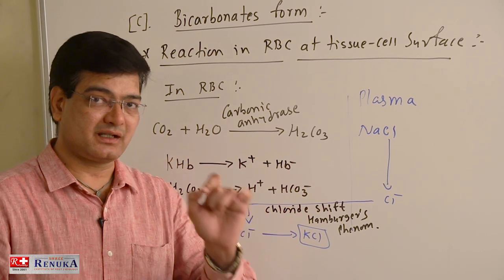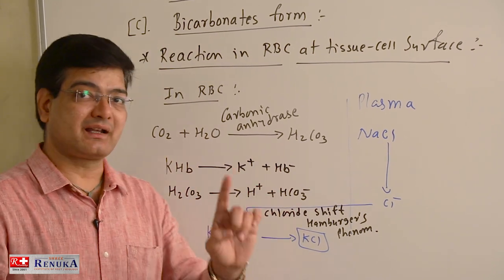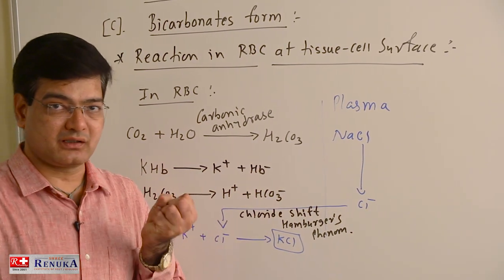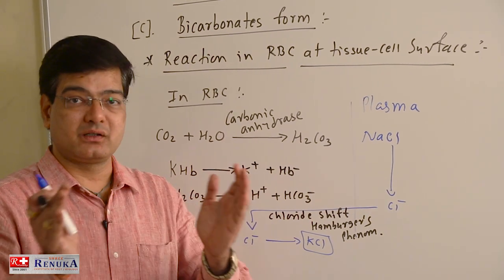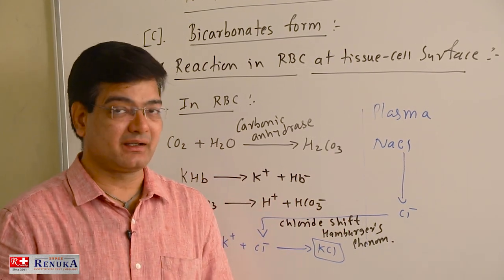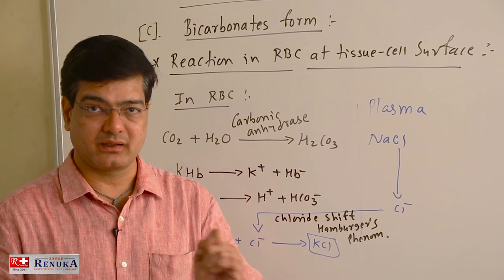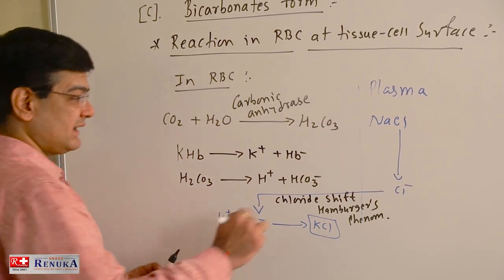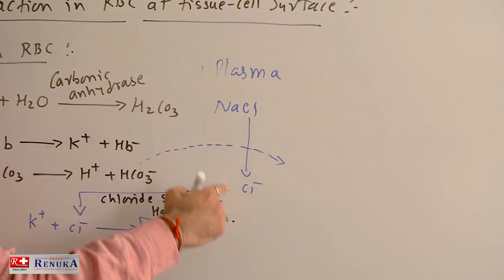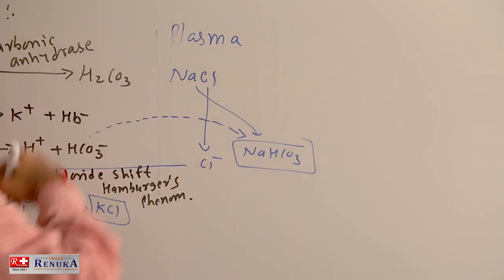In the form of KHCO3, carbon dioxide cannot be transported, because KHCO3 is highly alkaline — it is a strong base that increases the pH. In that case, the RBC would absorb water from the surrounding blood plasma, causing it to swell and possibly burst, which is called hemolysis. To prevent hemolysis and remove ionic imbalance in the RBC, the chloride shift (Hamburger's phenomenon) is required. HCO3- formed in the RBC then enters the blood plasma and reacts with Na+ to form NaHCO3 in the blood plasma. Sodium bicarbonate always forms in the blood plasma.